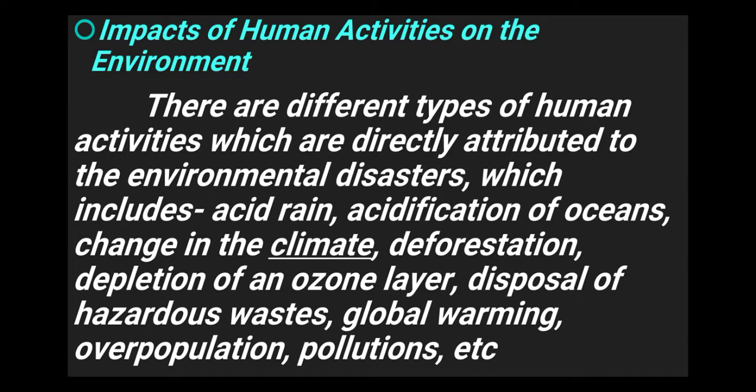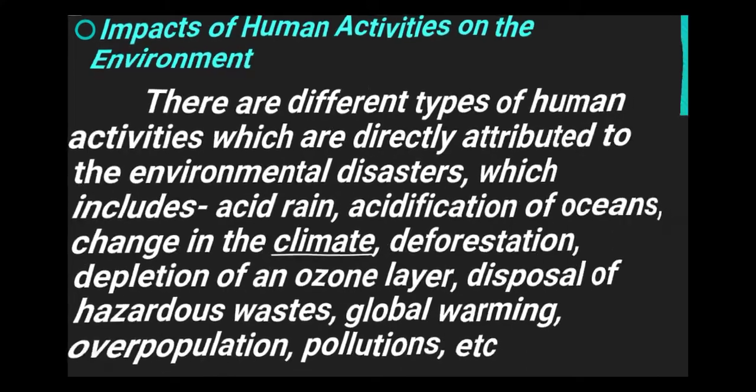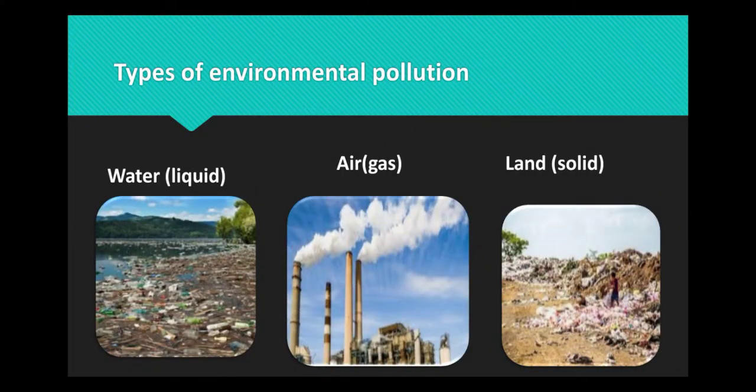Impact of human activities on the environment: There are different types of human activities which are directly attributed to environmental disasters, which include acid rain, acidification of oceans, changes in the climate, deforestation, global warming, overpopulation, and pollution. We are now going to see the different types of environmental pollution: water, air, and land.